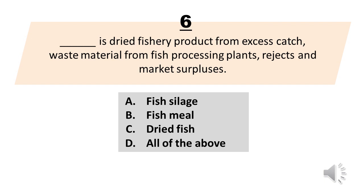Blank is dried fishery product from excess catch, waste material from fish processing plants, rejects and market surpluses. A. Fish silage. B. Fish meal. C. Dried fish. D. All of the above. The answer is Letter B, Fish meal.